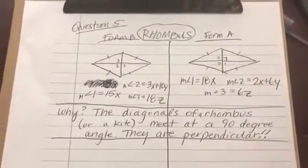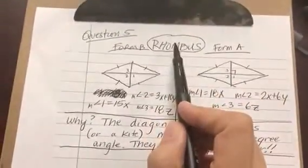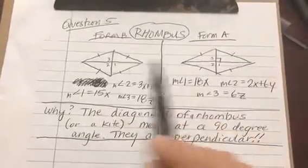Hello, hello. We're going to do question 5, rhombus, form A and form B.